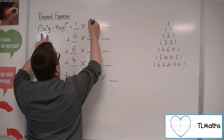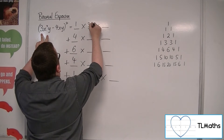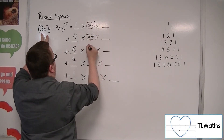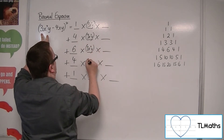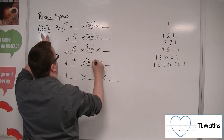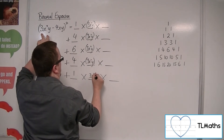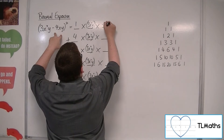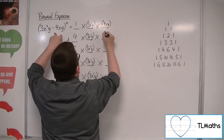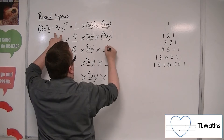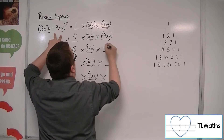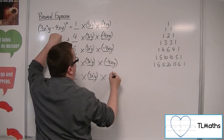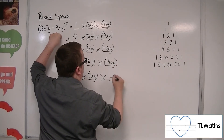We've got the 3x squared y going into the middle column. I need to write this in for each one, making sure each one has a bracket around it. And then we've got the minus 4xy for each of these as well, and that's got to have a bracket around it too. This is especially important because of that minus sign — it's the minus sign that can cause the most issues.